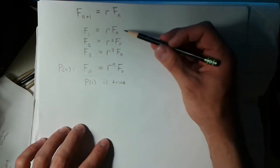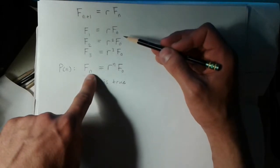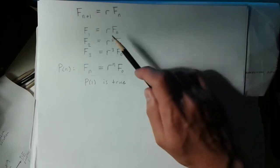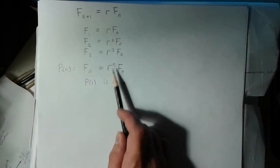We know that because when we plug in 1, F(1) equals r times F(0), which matches this form. This is r to the 1 times F(0).